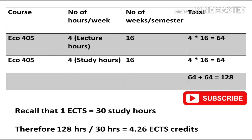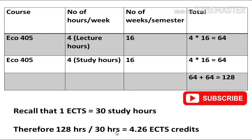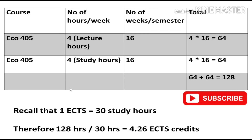Once you know the lecture hours and self-study hours, you can work with this table. For example, using ECHO 405: lecture hours per week is 4, self-study hours per week is 4, and weeks in a semester is 16. Multiplying 4 by 16 gives 64 for lecture, and 4 by 16 gives 64 for self-study. Adding them gives 128 total hours. Since one ECTS equals 30 study hours, dividing 128 by 30 gives 4.26 ECTS credits for that course.